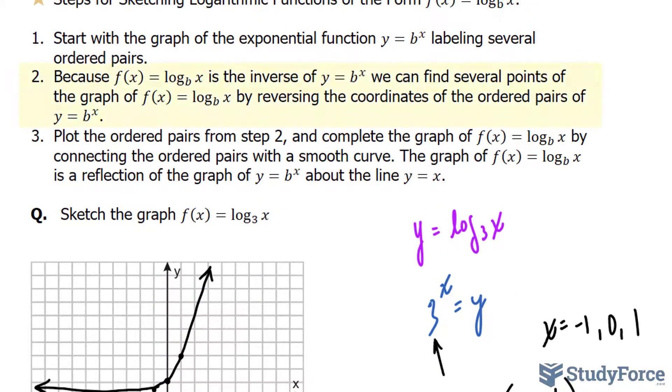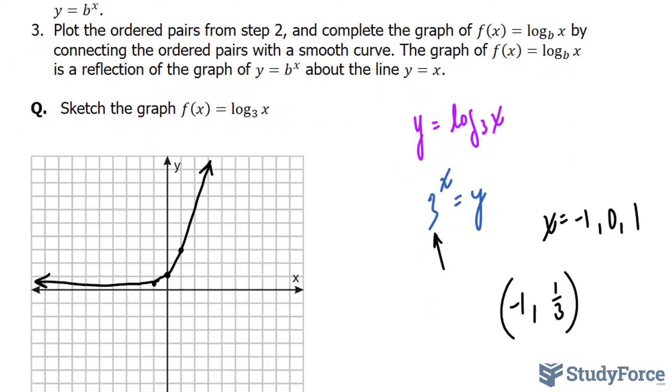In step number 2, they say, because f(x) = log_b(x) is the inverse of y = b^x, we can find several points of the graph of this by simply reversing the ordered pairs that we found here.